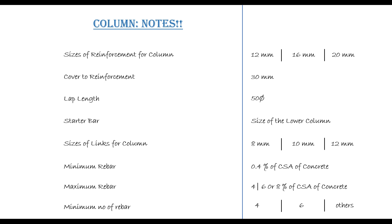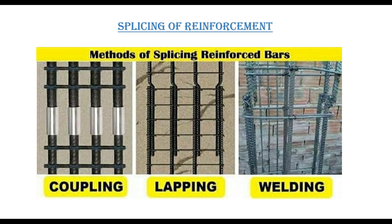Another important thing is the splicing of reinforcement. Splicing is done to allow for continuity of reinforcement, and generally we have three methods. The first is coupling, where you use a mechanical coupler to join two reinforcements together. The most commonly used method is lapping, where you lap reinforcements together by joggling one and lapping it with the other. Note that according to the code, if you have reinforcement greater than 32mm in size, lapping is not recommended.